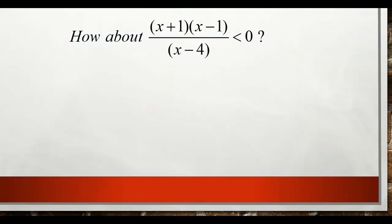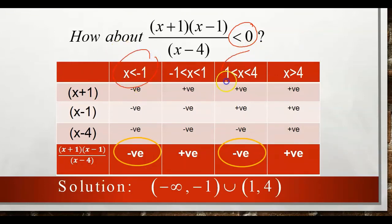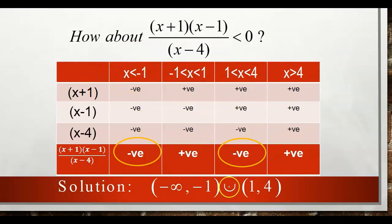For the same expression with inequality less than 0, we use exactly the same table. But now we choose the negative portions. The two negative intervals give us the answer. Written in interval form: the solution is (−∞, −1) union (1, 4).